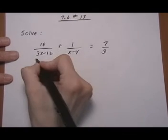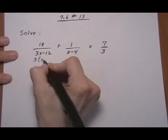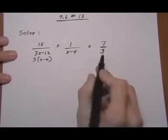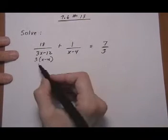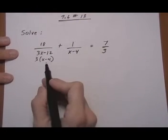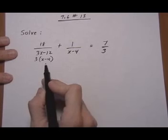So let's go ahead. 3 times x minus 4 and then the other two are all set. Now the first thing I want to do is look and see what values of x will not be allowed as solution.